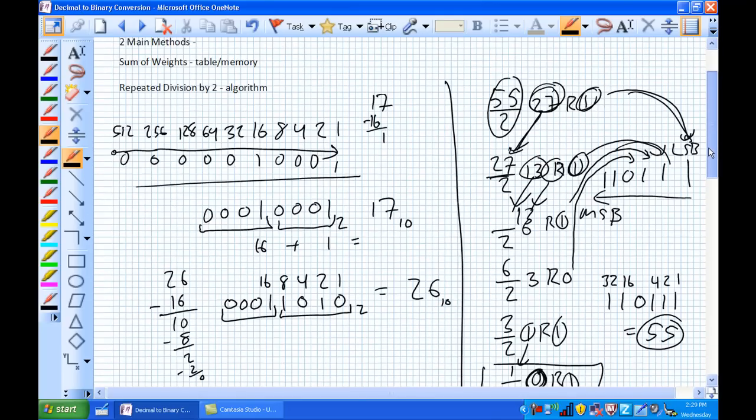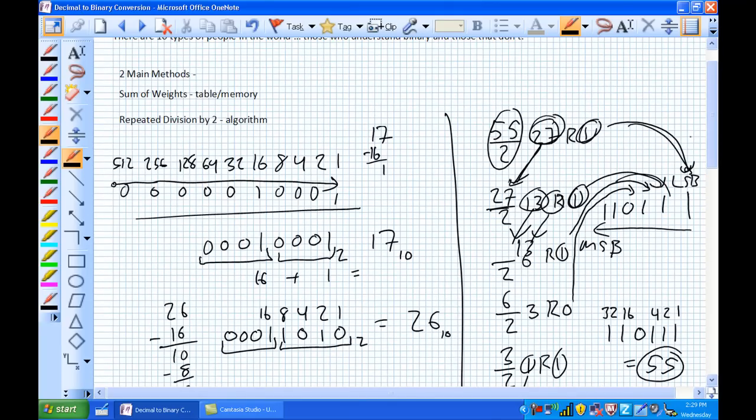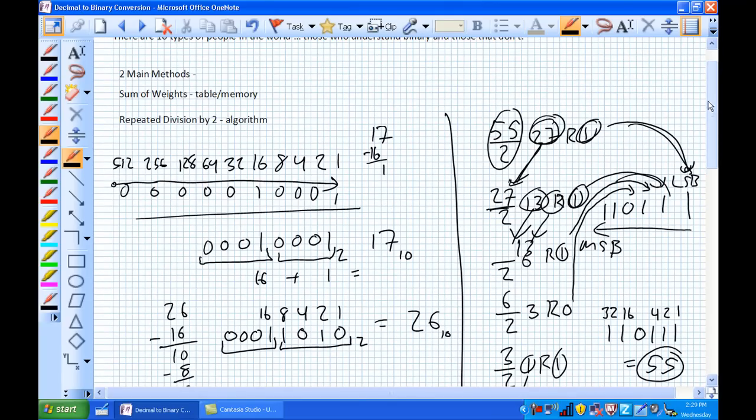So sum of weights, repeated division by 2 - those are the two main methods. But because I'm a nice guy, I'm going to show you method 3. There's a third method here which I'm going to call the secret cheating method, which you are not going to be allowed to do on the exam.